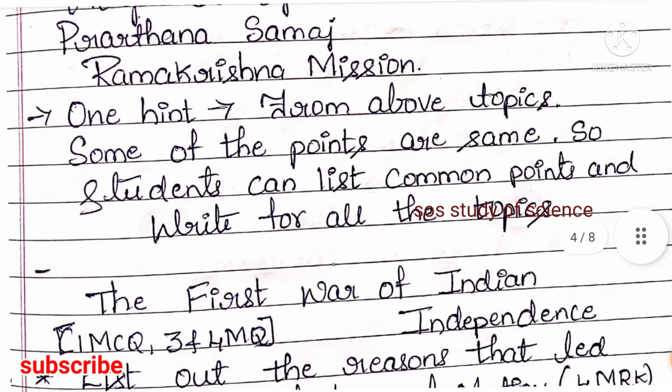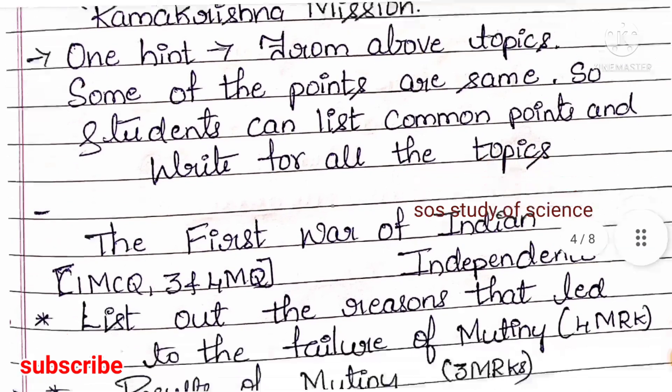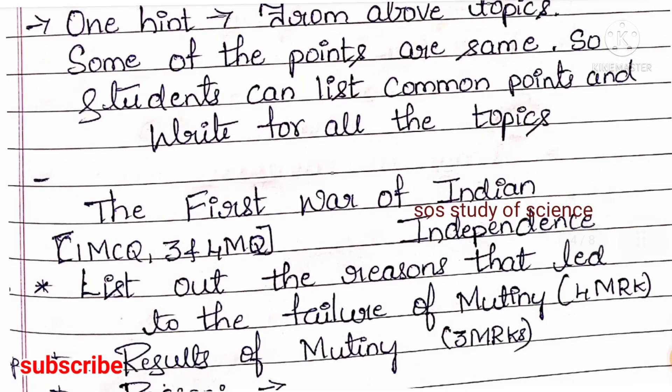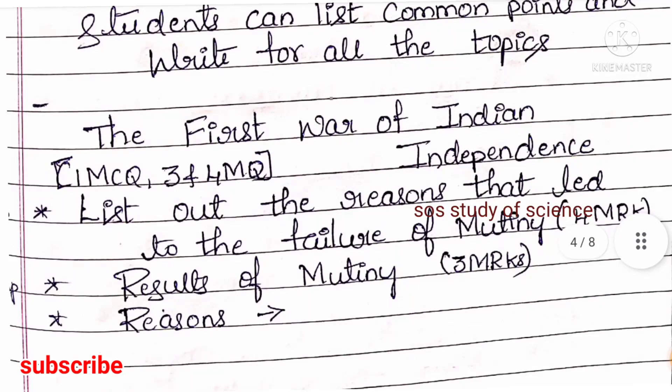Lesson 6 is the First War of Indian Independence. Here you can expect 1 MCQ, a 3-mark question, and a 4-mark question. Important concepts: reasons that led to the failure of the mutiny — usually asked for 4 marks; results of the mutiny — usually asked for 3 marks; and the reasons for the mutiny.